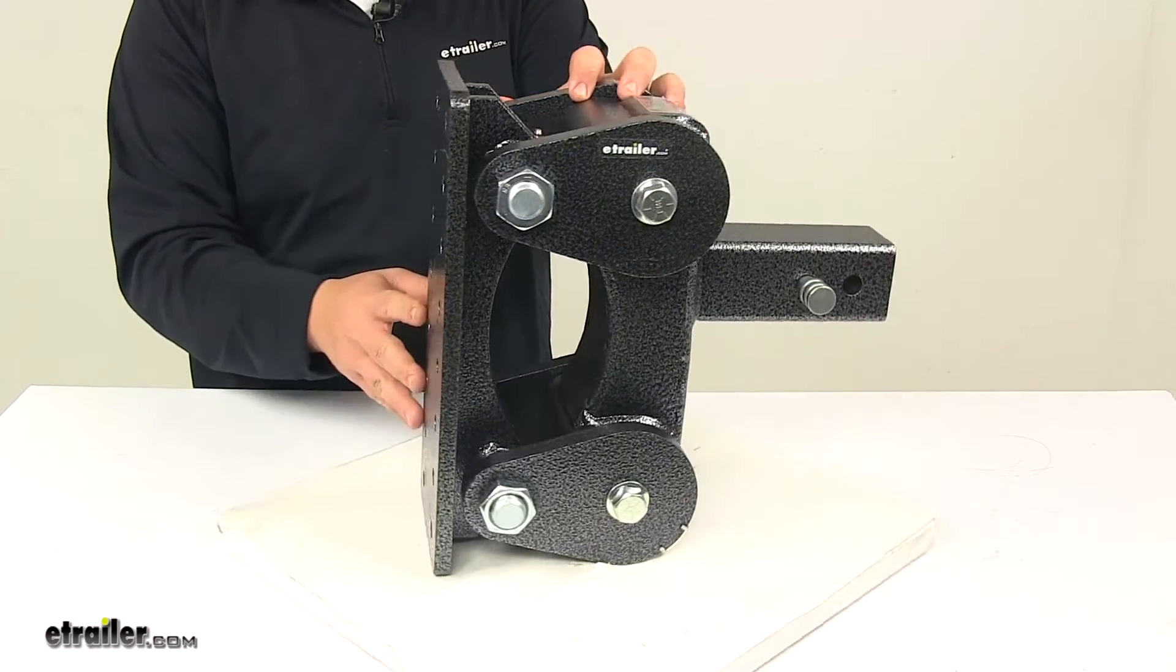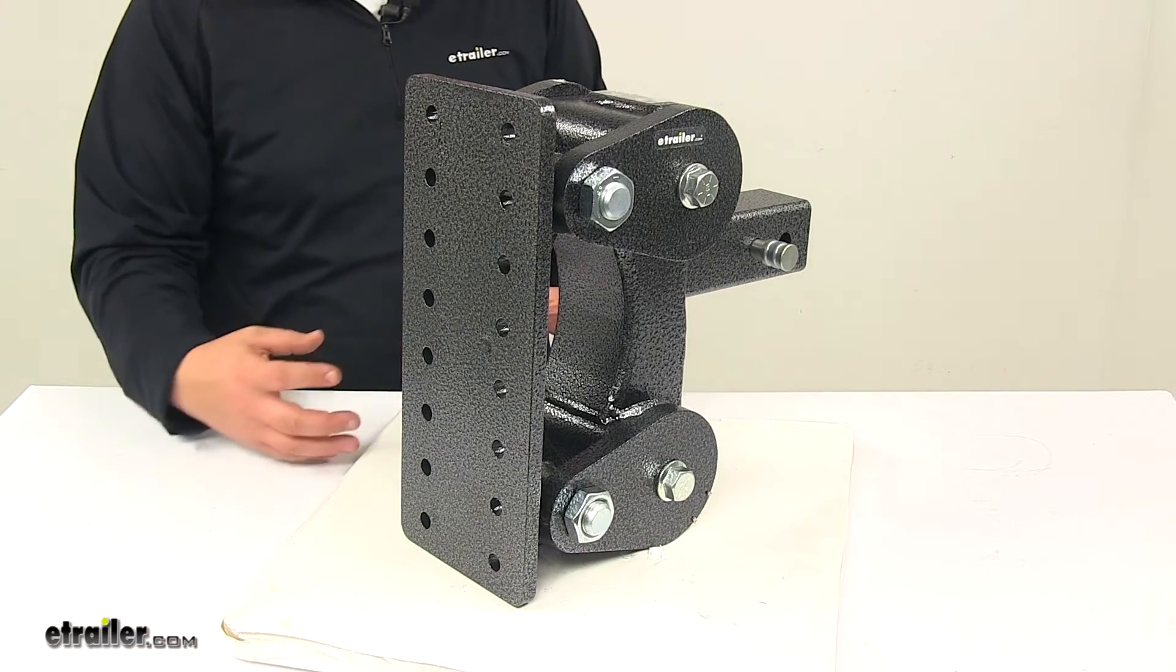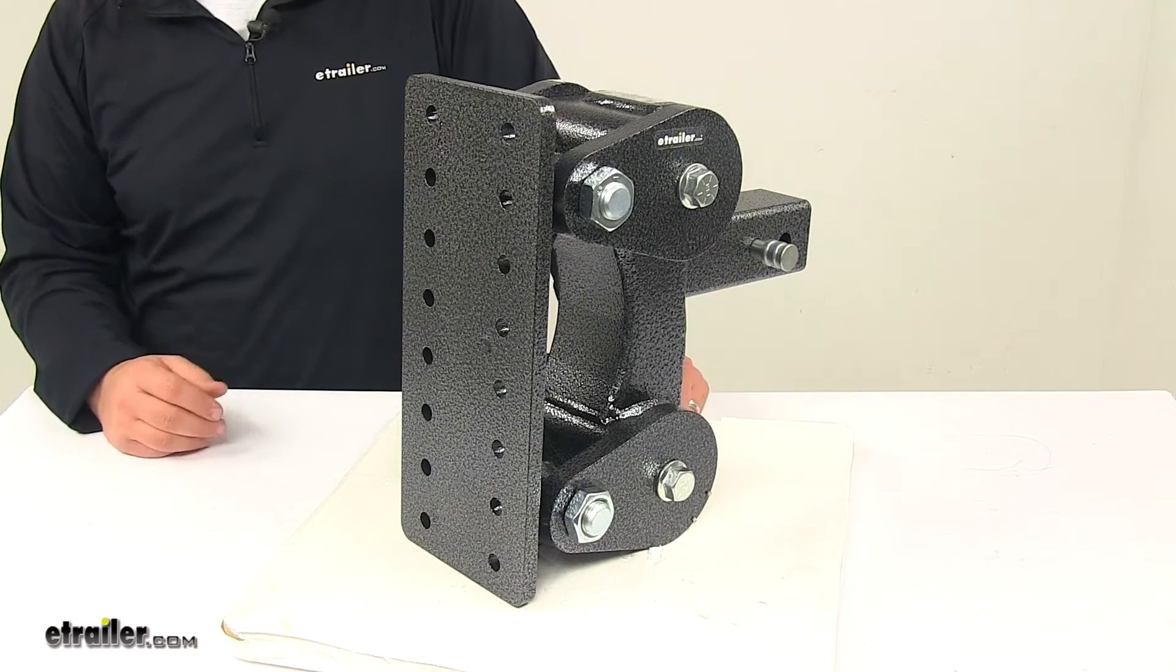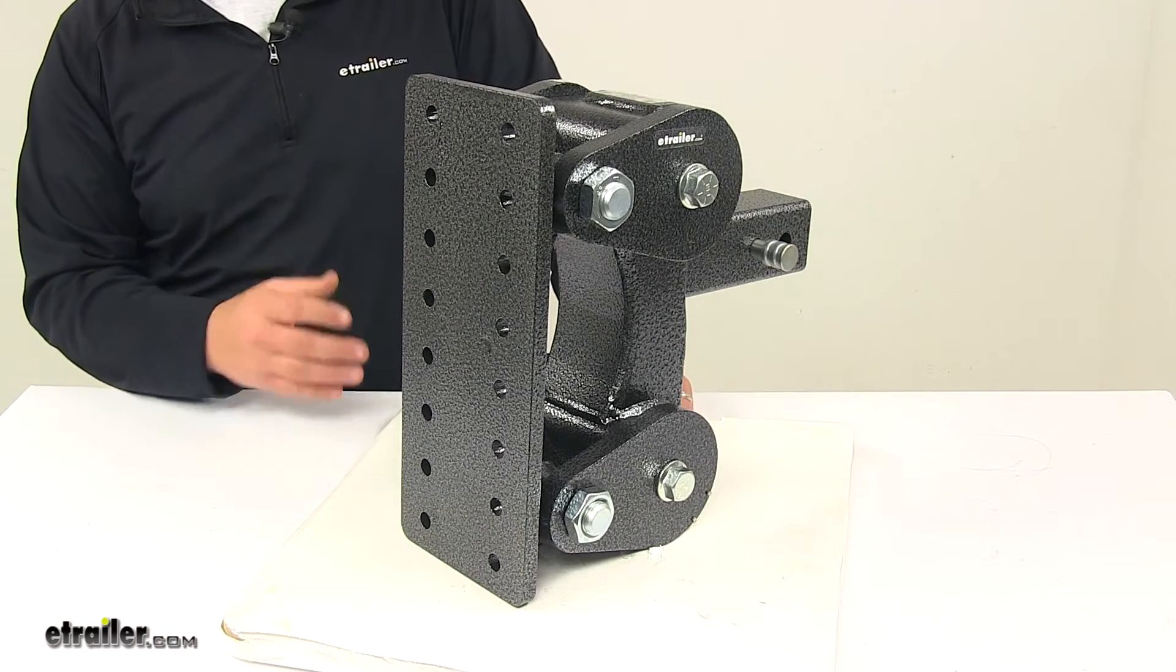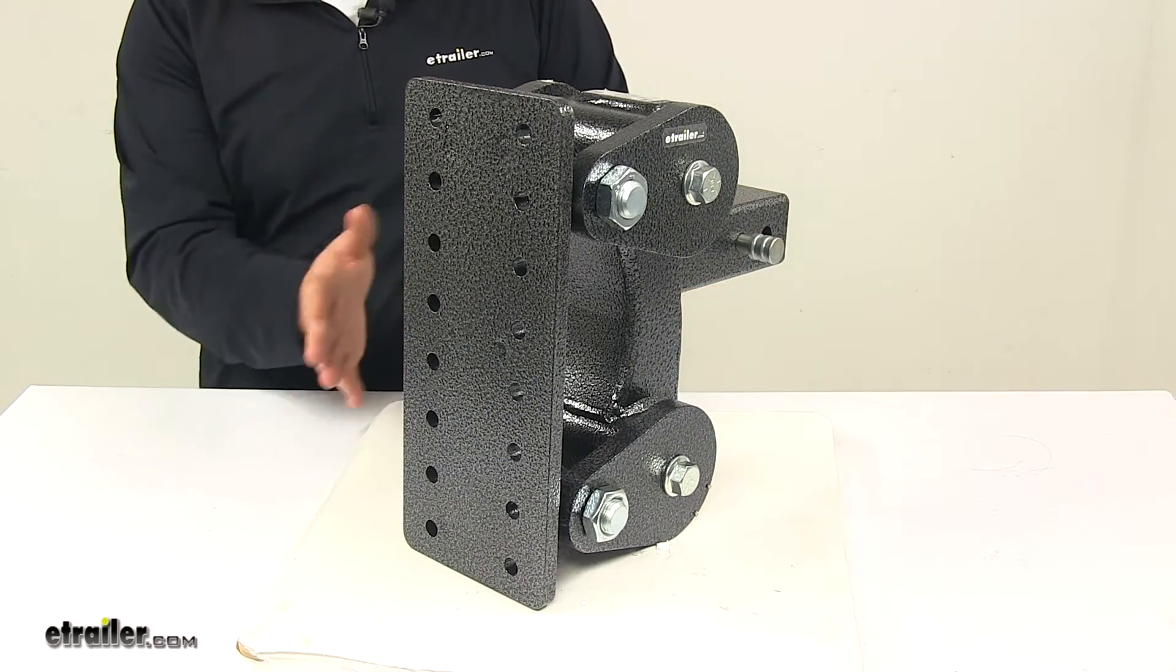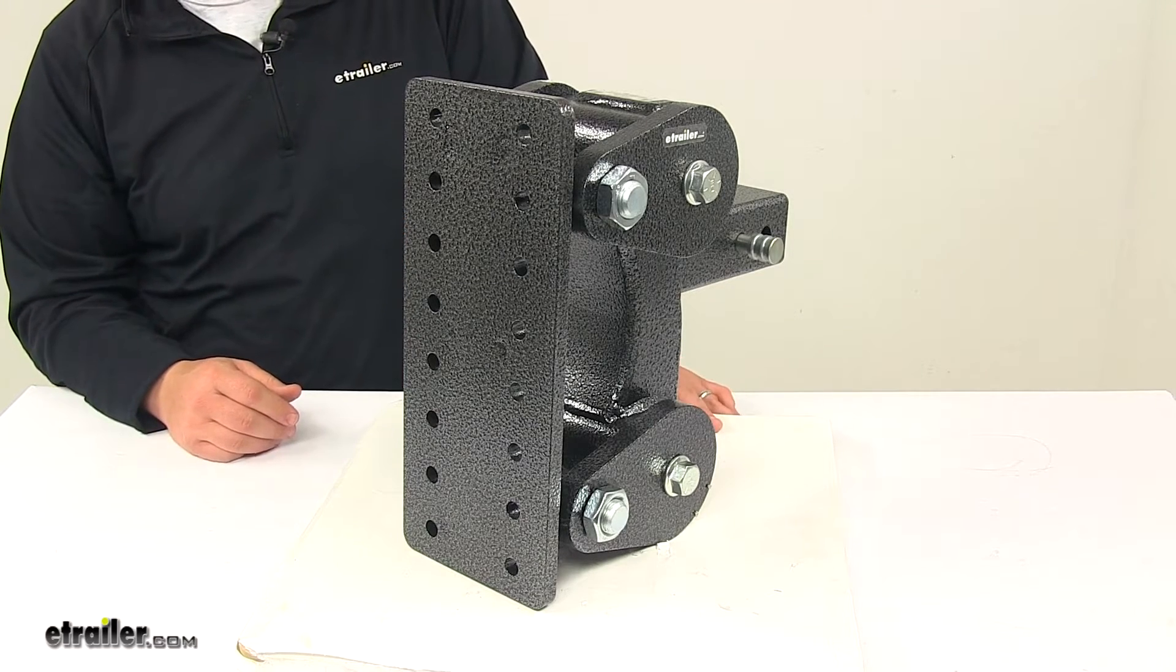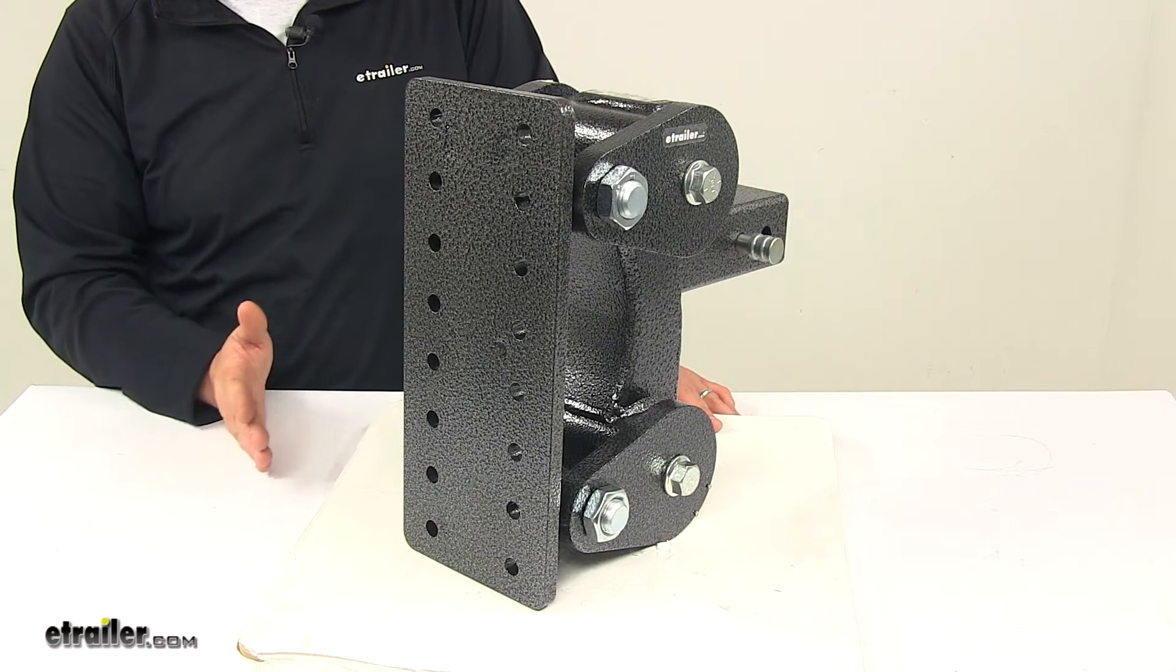So with rubber torsion hitches, about only 10% of the trailer inertia actually transfers to the vehicle compared to 100% when using a standard hitch. Now the tow vehicle and the trailer are designed to track independently with this system. So that's going to give you greater control and added safety by reducing the amount of sway and trailer bounce.